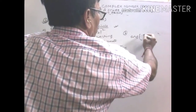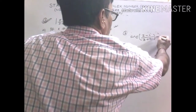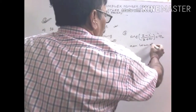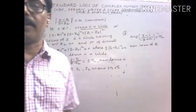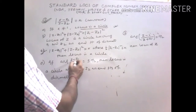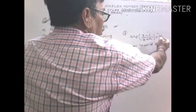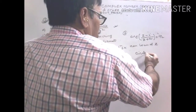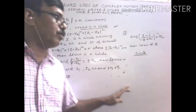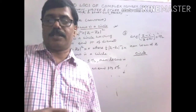Application 3: arg((Z - i)/(Z + 3i)) = π/2. Looking at standard result 4, if the argument of (Z - Z1)/(Z - Z2) equals ±π/2, the locus is a circle. Here it is π/2, so the locus is obviously a circle. This is the advantage — if you know the standard result, you can write the answer within a second.